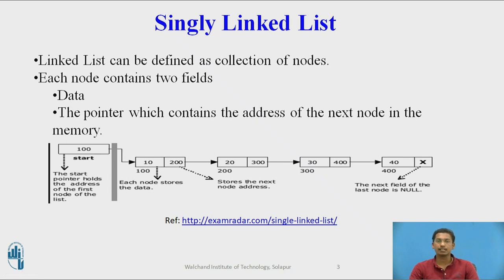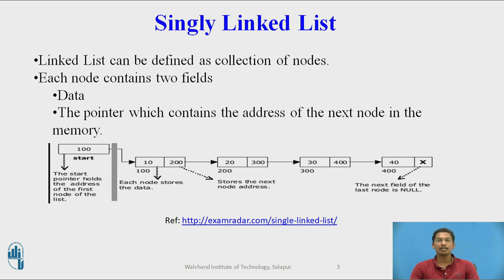We are talking about a singly linked list. In a doubly linked list, there are three fields in general: data and two pointers. One pointer will point to the next node, and another pointer will point to the previous node.